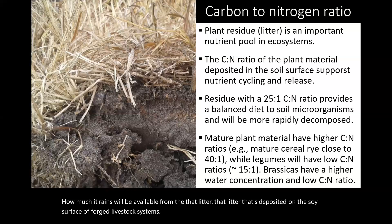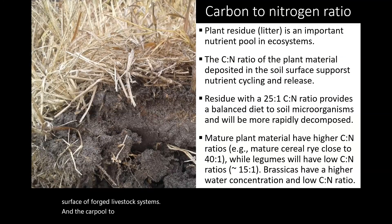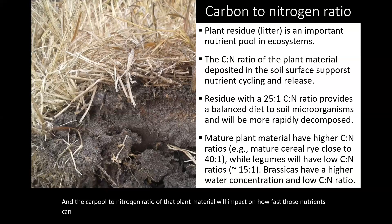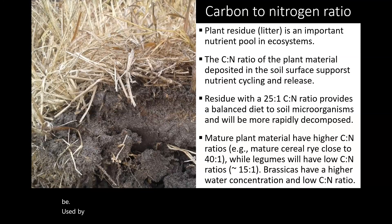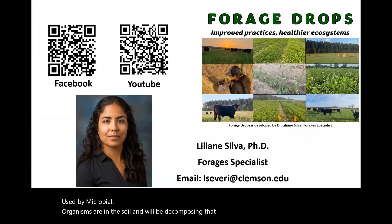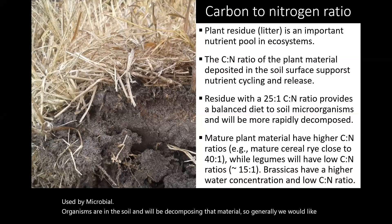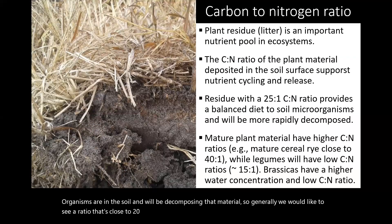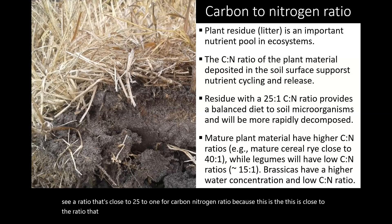The carbon to nitrogen ratio of that plant material will impact how fast those nutrients can be used by microbial organisms in the soil that are decomposing that material. Generally, we would like to see a ratio that's close to 25 to 1 for carbon to nitrogen, because this is close to the ratio that most soil microorganisms have for their own biomass.